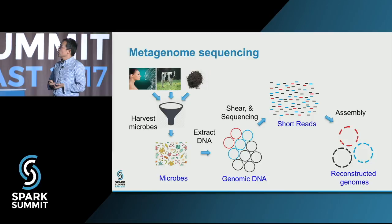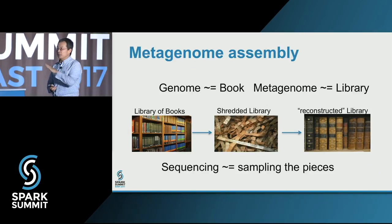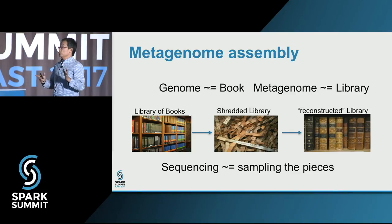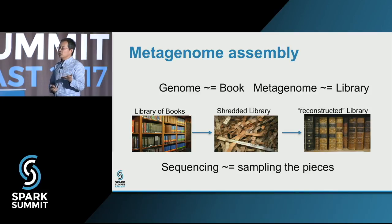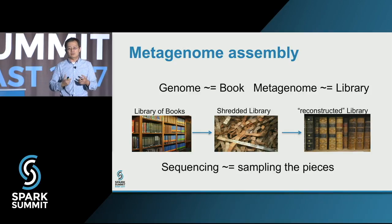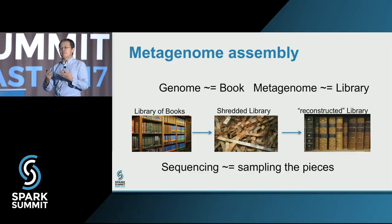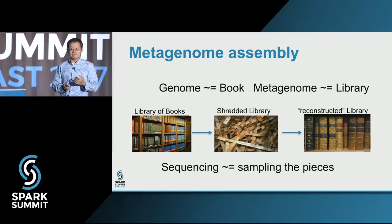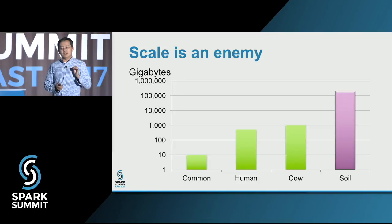This reconstruction process — since you're all computer scientists, I'll use an analogy. A genome is really a book — a long string of AGCTs. A metagenome is really a library of books. There are rare books because we have rare species, and also common species that have many copies. During the sequencing process, we shred all the books into pieces. Our job in assembly is to reconstruct the library from these shredded pieces. We don't get all the pieces — the output of a metagenome sequencing experiment is a sampling of this pile. The more sampling you have, the more chance you'll recover those rare books.